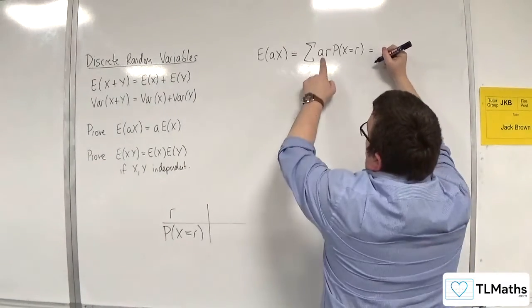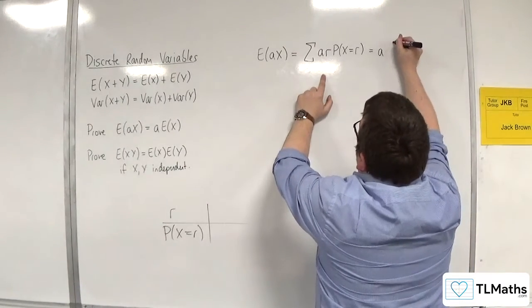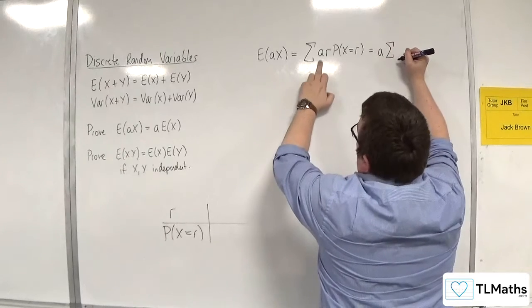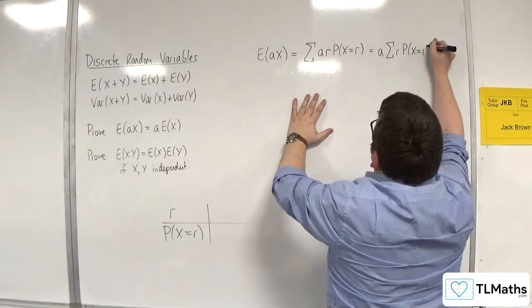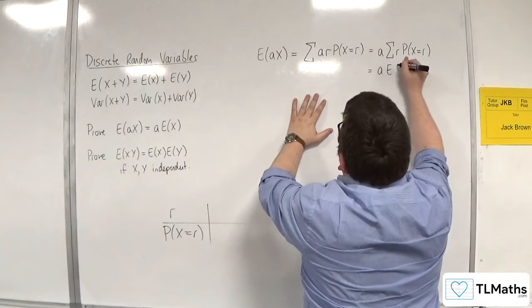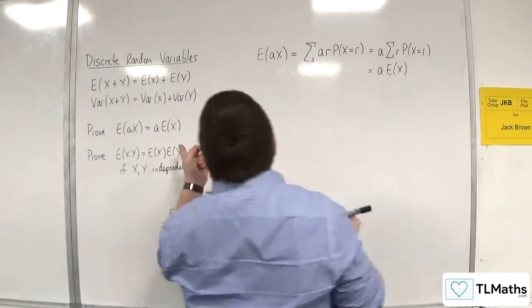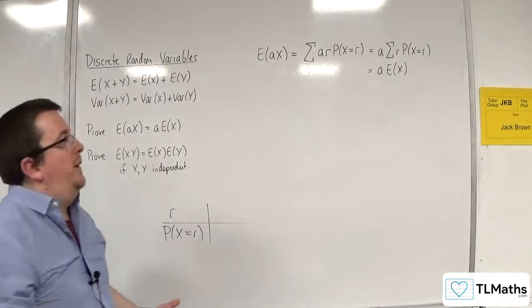And then I'd add them all together. And that would be the expected value of aX. But we know from summations that I can just pull a outside of that summation, because it's just a constant multiplier. So, I would get this. And, of course, that is just a times E(X). So, the first one is quite easy to prove.